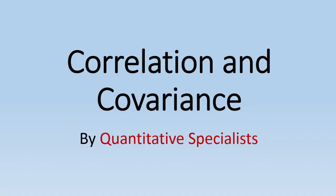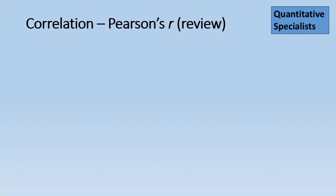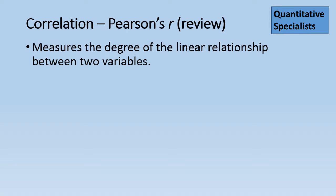Here I'd like to take a look at correlation and covariance. A correlation, or Pearson's r, as a review, measures the degree of the linear relationship between two variables.